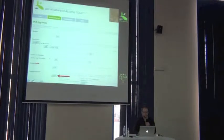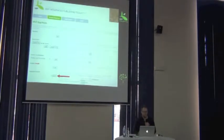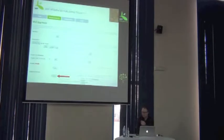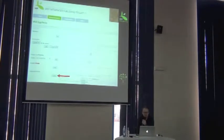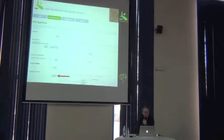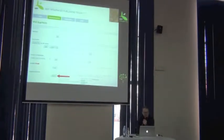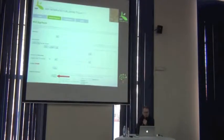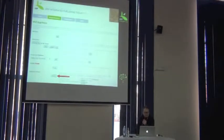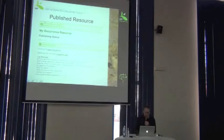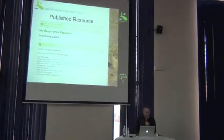Then there is the publish button. It does a lot of things. We've had people complain that it's not the greatest name for this button, but if we described everything that happens, it would be a very big button. What this publish button does is it publishes your metadata and, in this case, your occurrence data. It wraps everything into a DwC archive. When you press that button, you'll actually see some log messages that describe what happened behind the scenes.